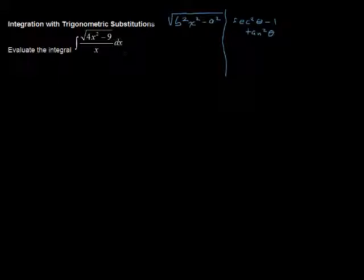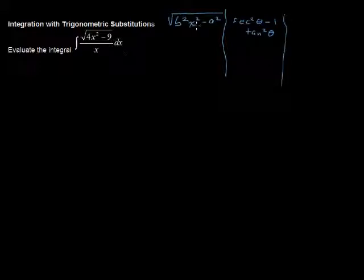We would like it to just be tangent squared of theta, because then we would take the square root of that and end up with just tangent of theta — and that simplifies things. So if we see this form, we'll let x equal to a over b times secant of theta.